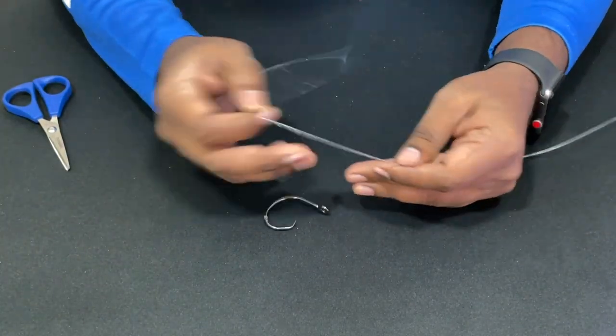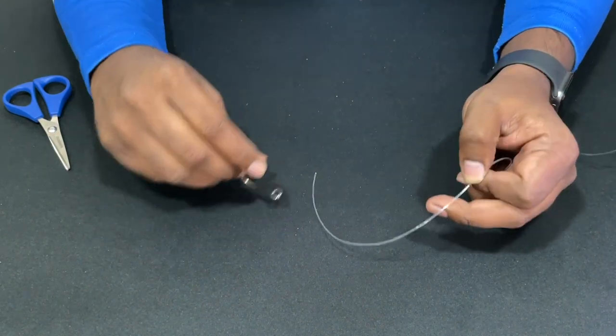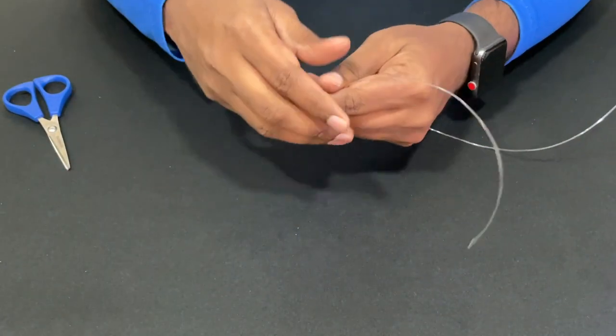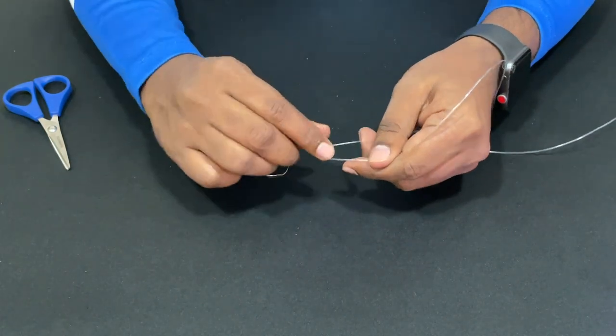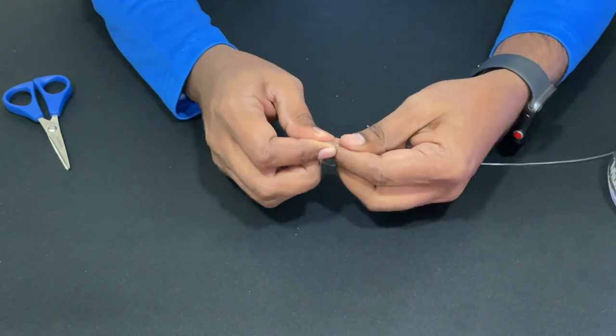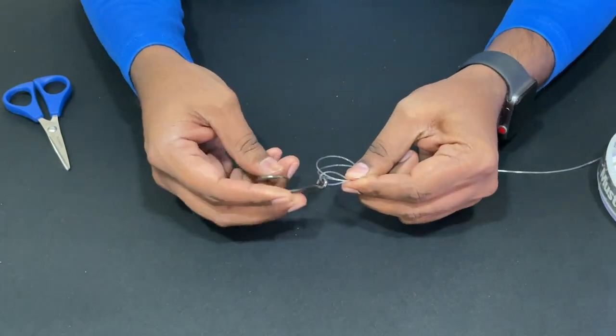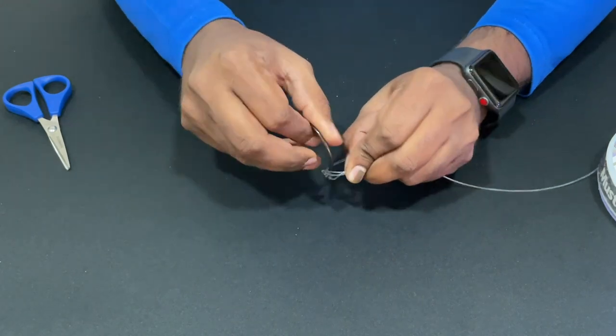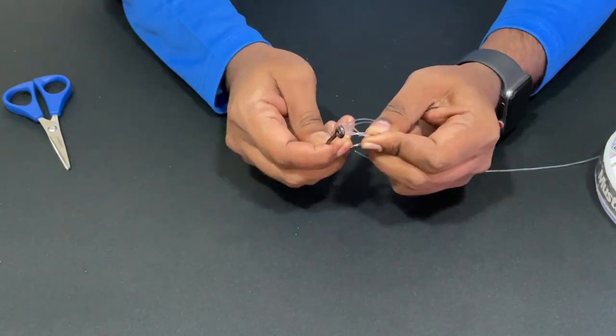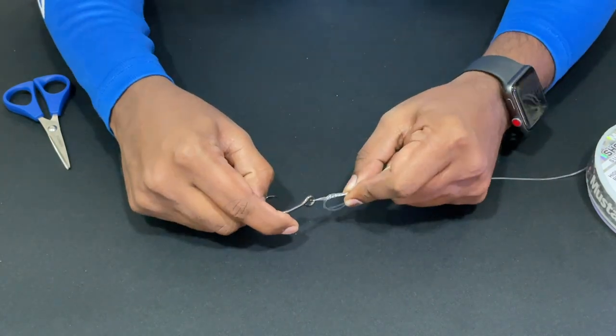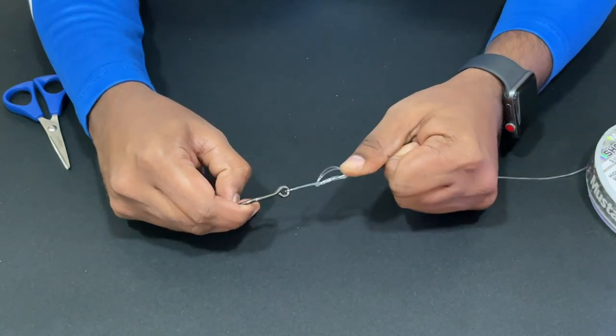Let's do the loop knot. So, here we are looping, and hook two times, just pull it.